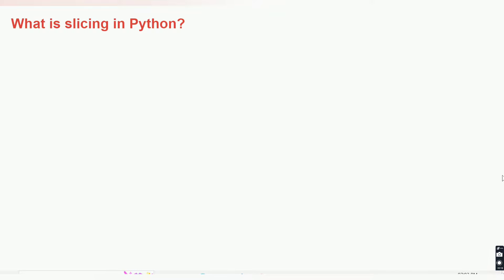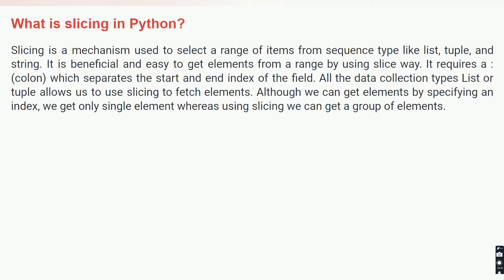Slicing is basically a concept used with the data types string, list, and tuple. It is a mechanism used to select a range of items from a sequence type like list, tuple, and string. It is beneficial and easy to get elements from a range. As we know, items stored in these three data types are stored in index manner, so to get a large group of elements from a sequence we use the concept of slicing.